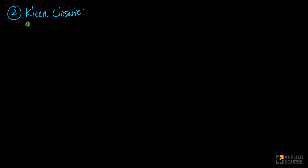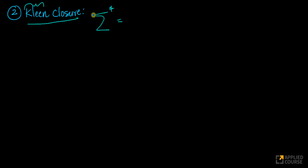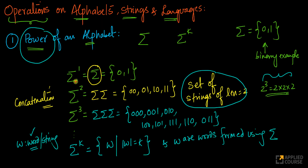The second concept is called Kleene closure, which we've actually used already. We typically write it as sigma star. The actual formal name is Kleene closure — Kleene, if I'm not wrong, is the name of a mathematician. Sigma star is also referred to as the Kleene closure of sigma. To formally define this, it starts with sigma power 0. What is sigma power 0?